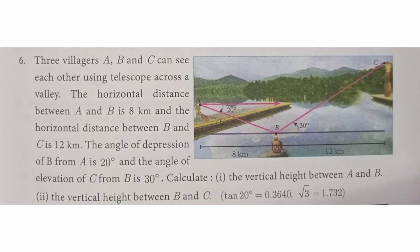Three villages A, B, and C can see each other using telescope across a valley. The horizontal distance between A and B is 8 km and the horizontal distance between B and C is 12 km. The angle of depression of B from A is 20 degrees and the angle of elevation of C from B is 30 degrees. Calculate the vertical height between A and B and the vertical height between B and C.